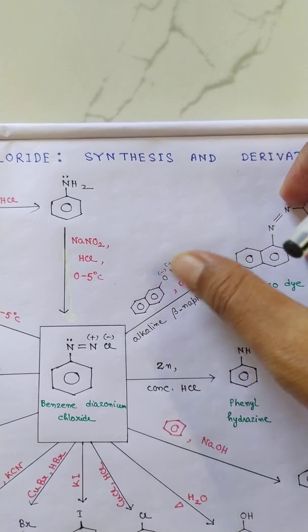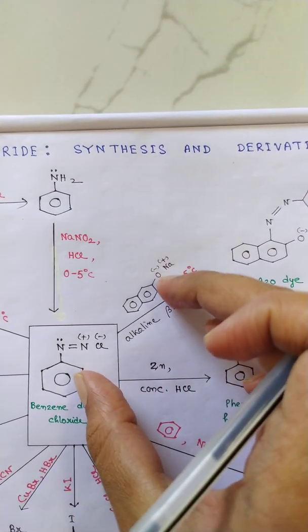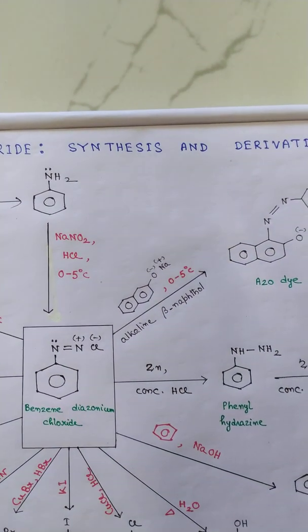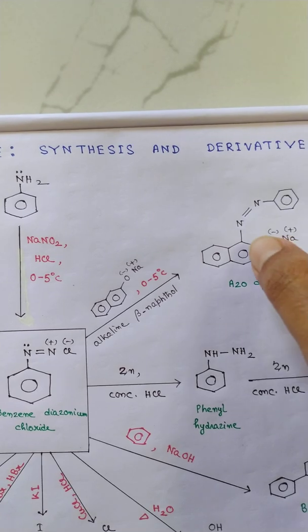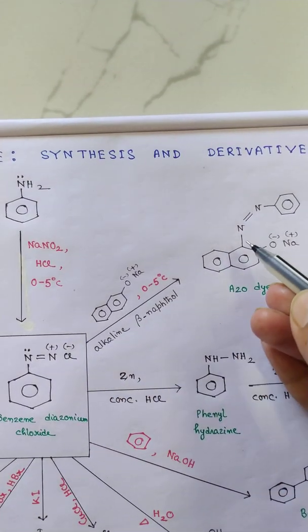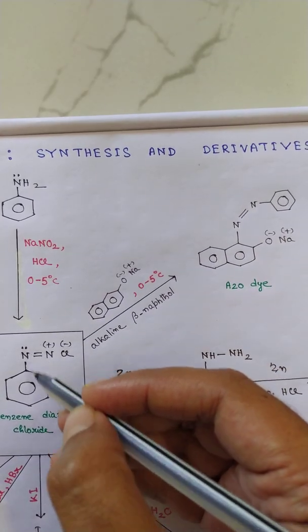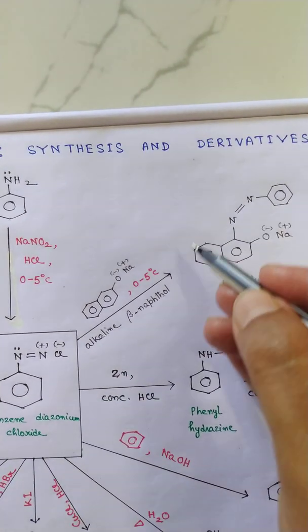Now we also need the cold condition here. When these two reagents are coupled, we have the substitution at the alpha position. So this N comes here, bond then double bond, then double bond, then the phenyl ring. It forms the azo dye.